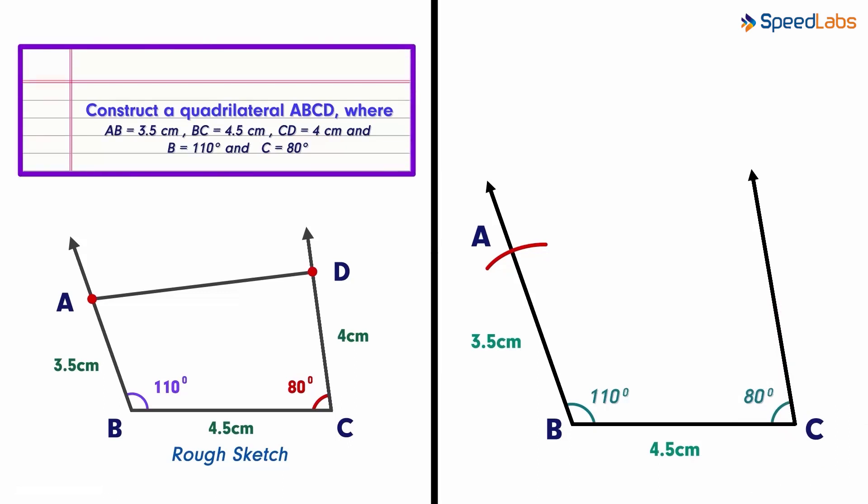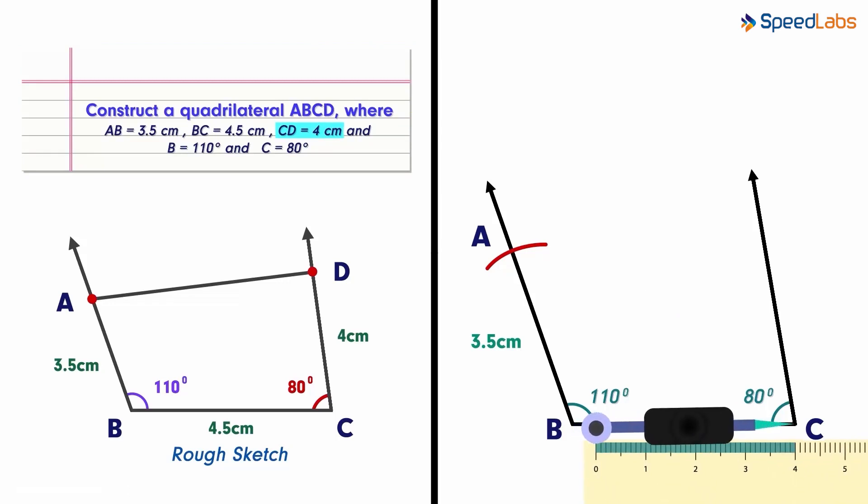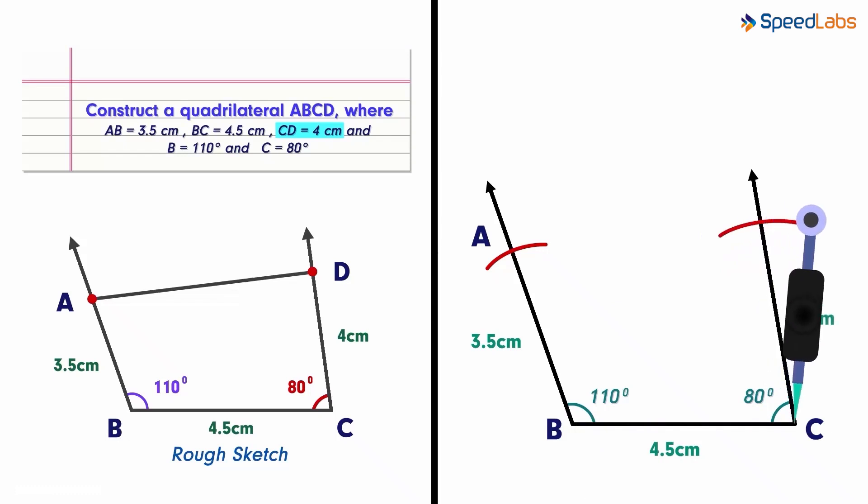Now looking at the question, I want you to guess what we should do next. We are given data for side CD, that is 4 cm. So we can keep the compass at point C and mark 4 cm here. This gives us side CD.